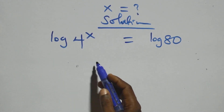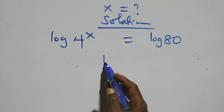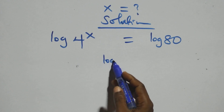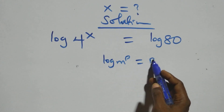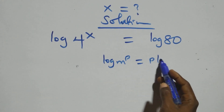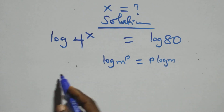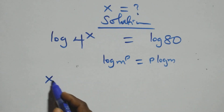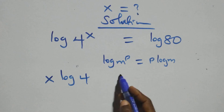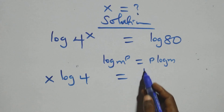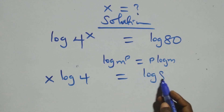We take the power log rule here. We have log m raised to the power p, which is the same as p log m. So we have x log 4 equals to log 80.